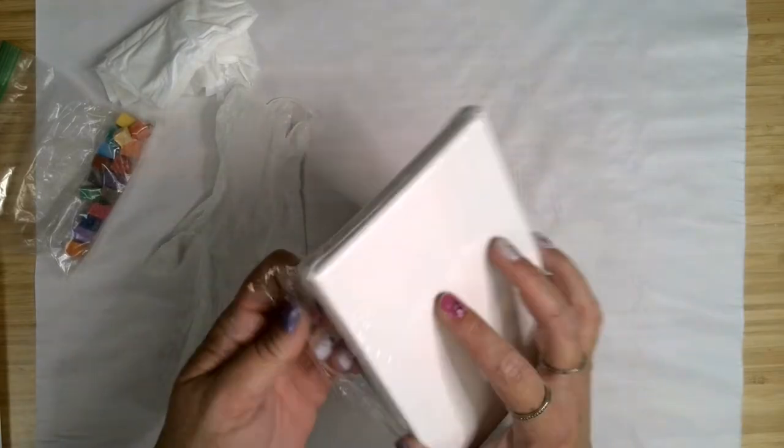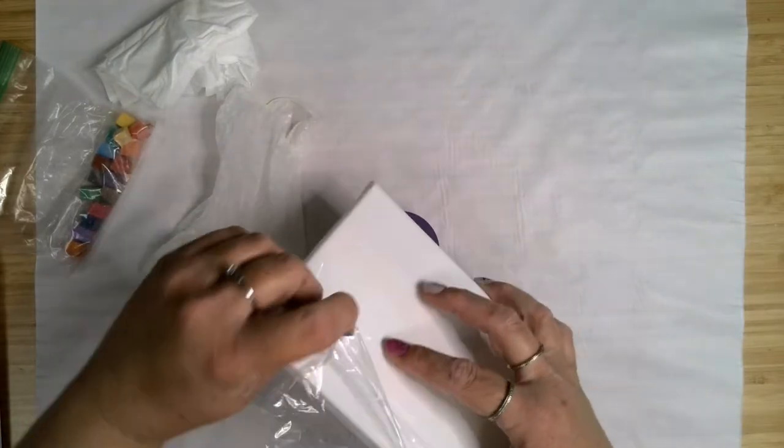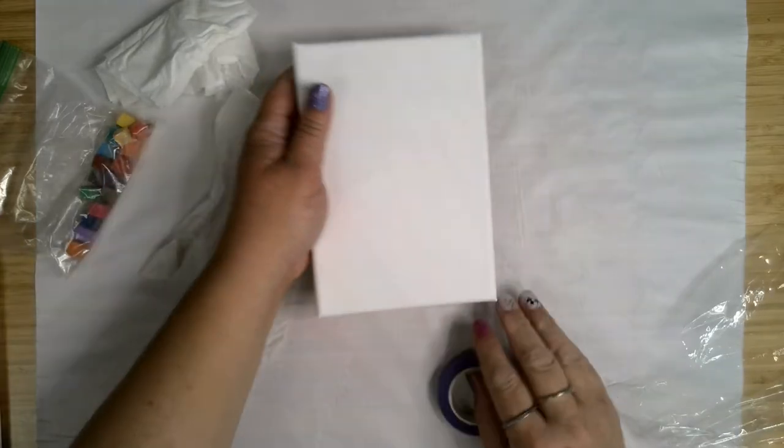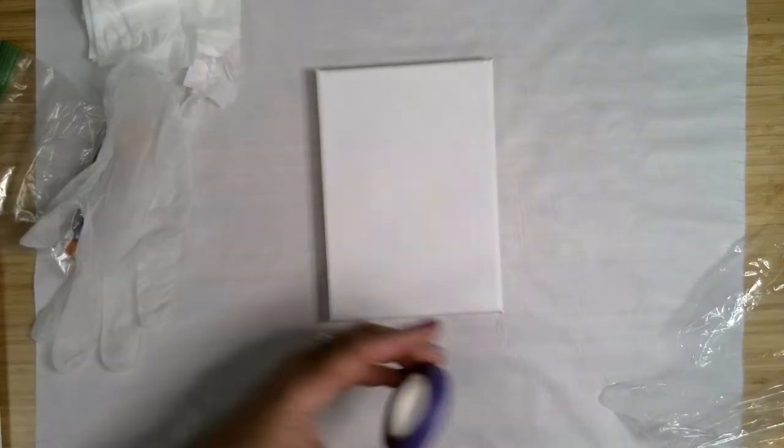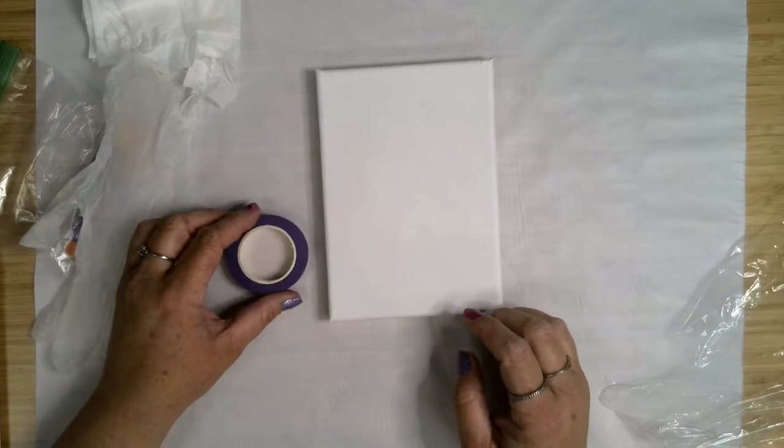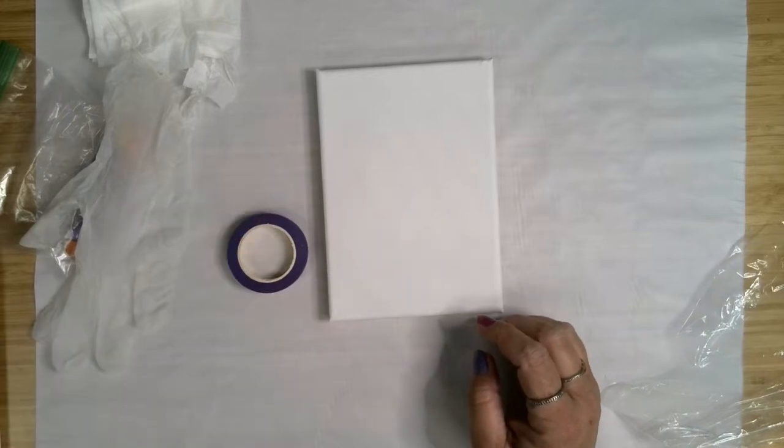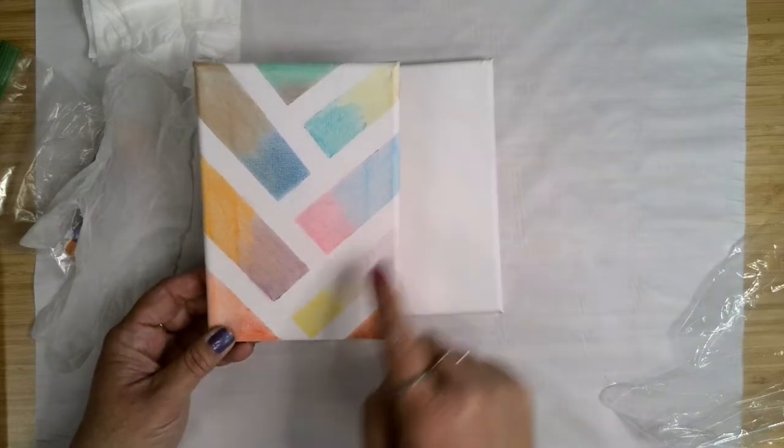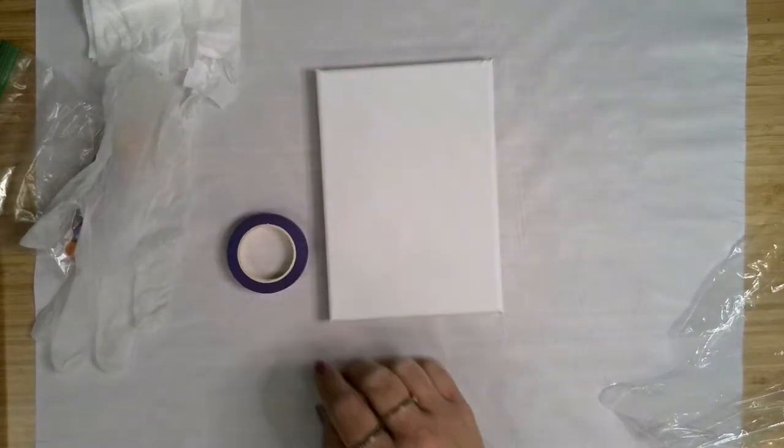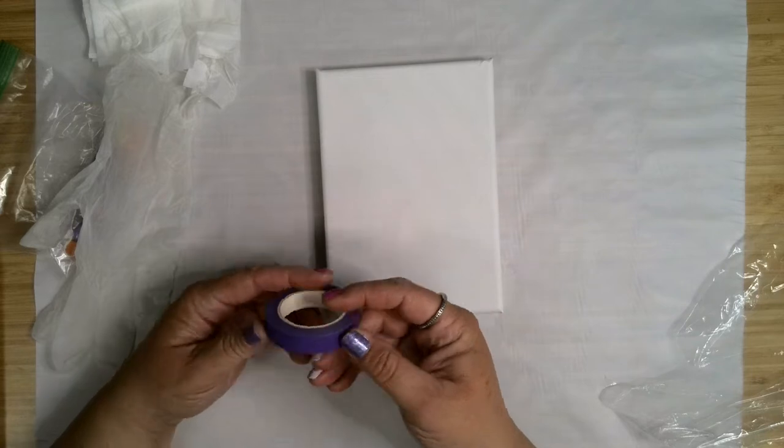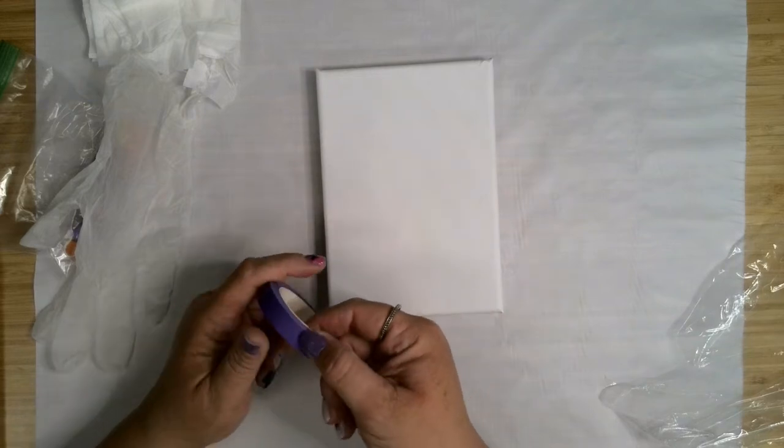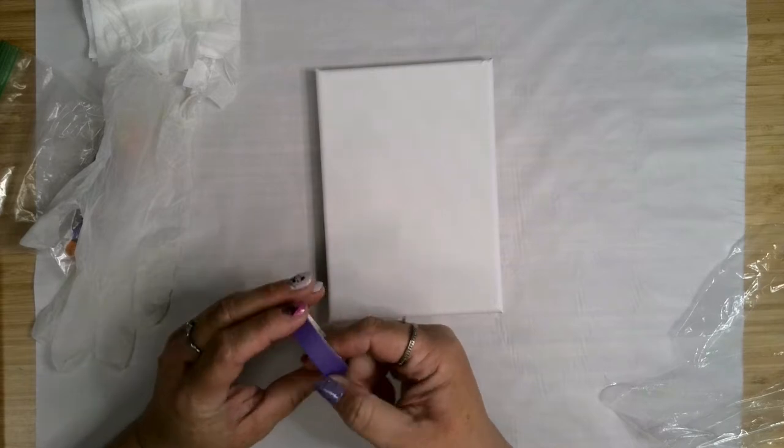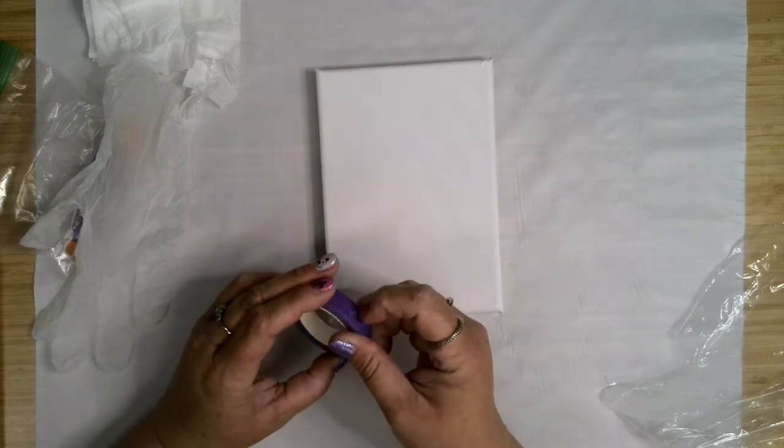So to get started we're going to unwrap our canvas. There we've got our canvas and you're going to make your design choices. On my initial example I just did kind of a cross where they met and I got these really cool white spaces. I just need to find the end of my tape.